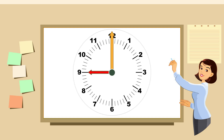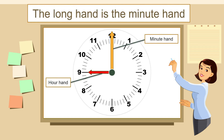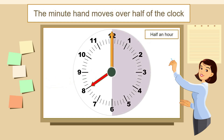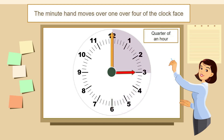Pupils, you can see the red hand is short and the orange hand is long. The short hand is called the hour hand, and the long hand is called the minute hand. The minute hand moves over half of the clock face — this is called half an hour.